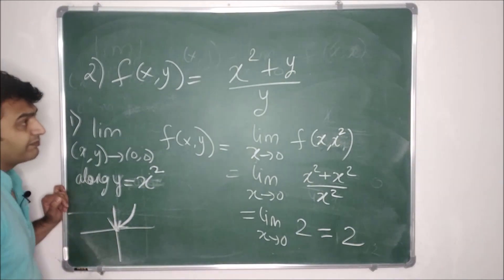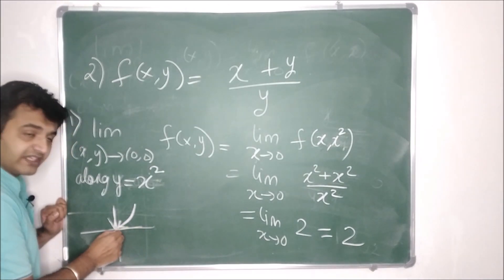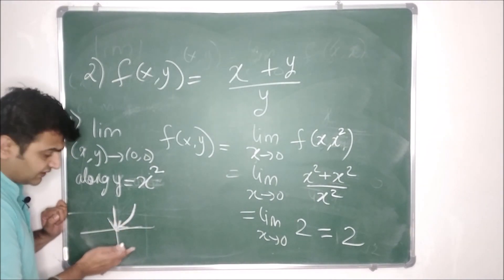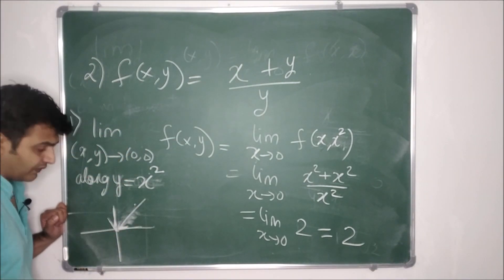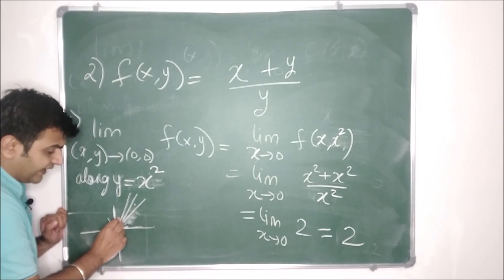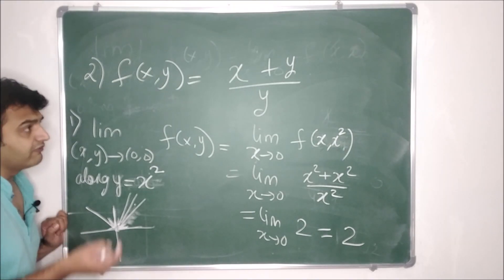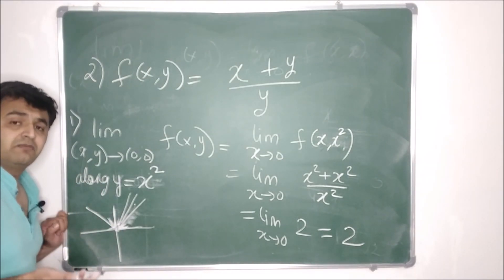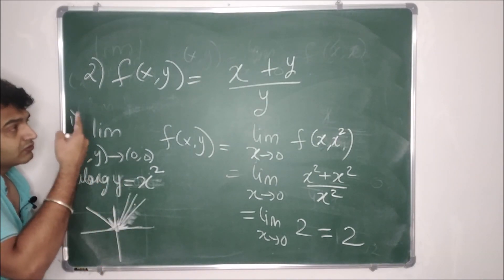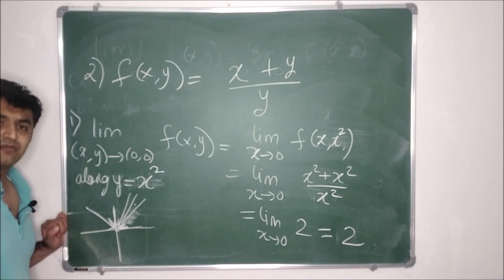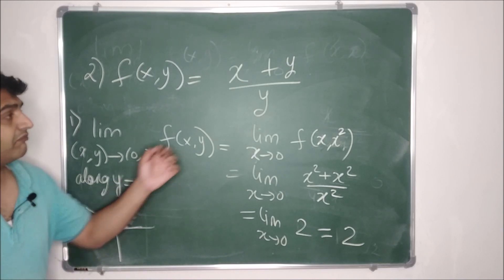A useful tip on choosing paths: if your expression has degree 1 terms like x + y, you can use horizontal, vertical, or linear paths like y = mx. If the expression is quadratic, you can try a parabolic path like y = x². If it involves x³ or higher, choose paths accordingly based on the degrees present in the equation. The key is to match the path to the structure of the function.